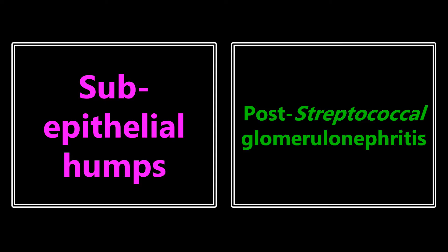Subepithelial humps — this is going to be in reference to post-streptococcal glomerulonephritis. This is very, very high yield. Please know all of the buzzwords associated with this. Be able to identify these things on light microscopy or electron microscopy for all of the glomerulopathies. This is very high yield — I can guarantee you're going to get a question on this.